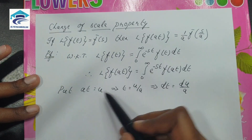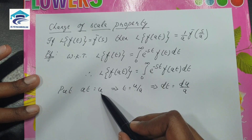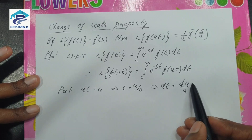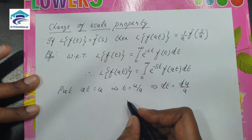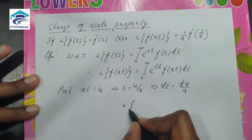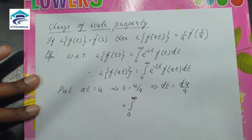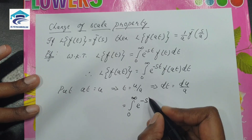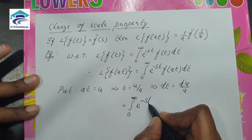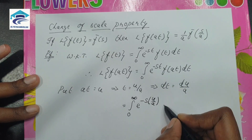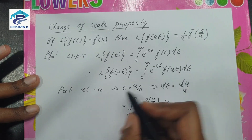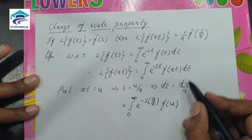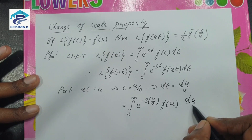We have t here, and instead of at we can use u, and instead of dt we can use du/a. Applying everything on the right hand side, this becomes the integral from 0 to infinity of e to the power minus s times (u/a), times f(u), times du/a.